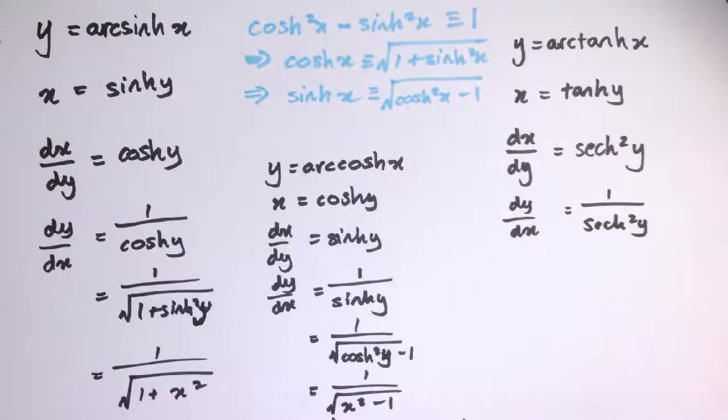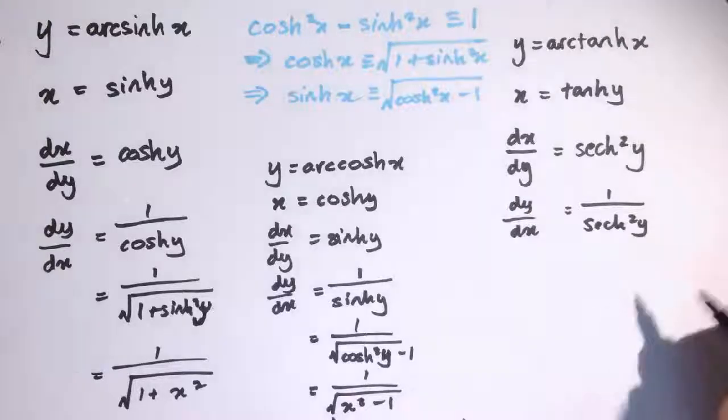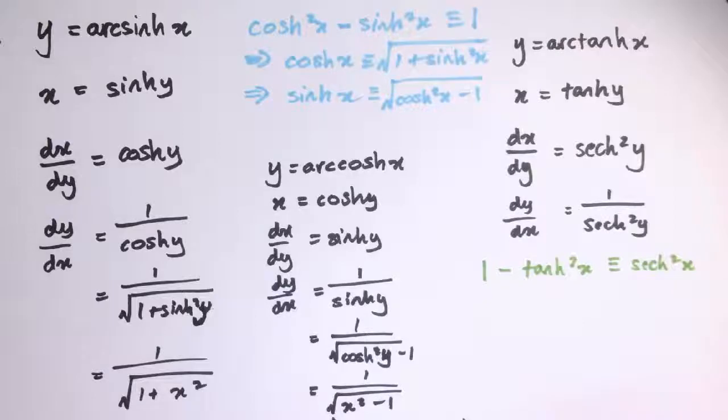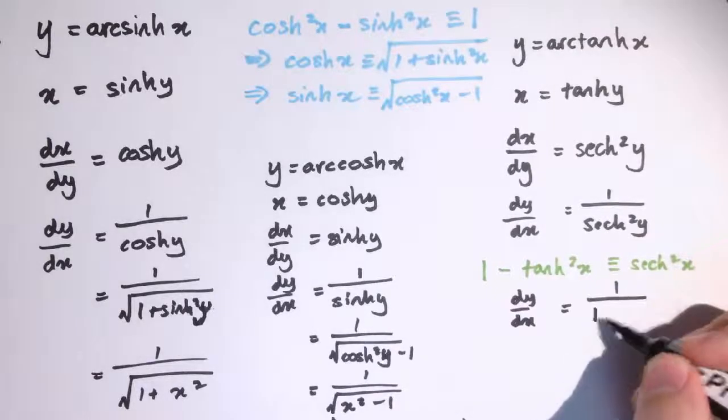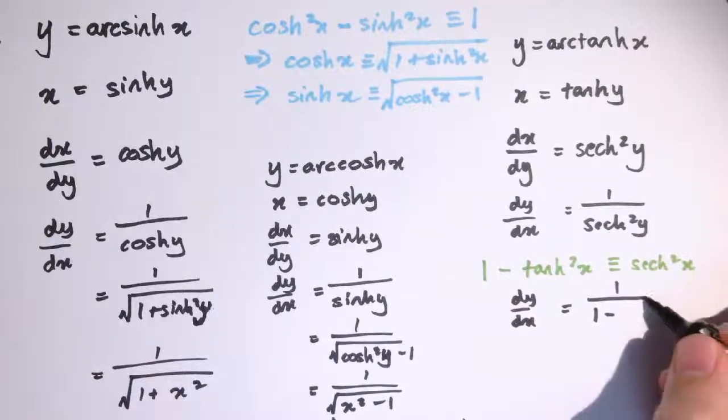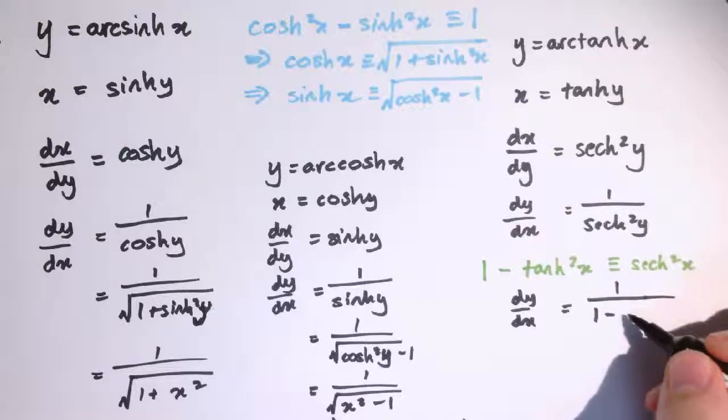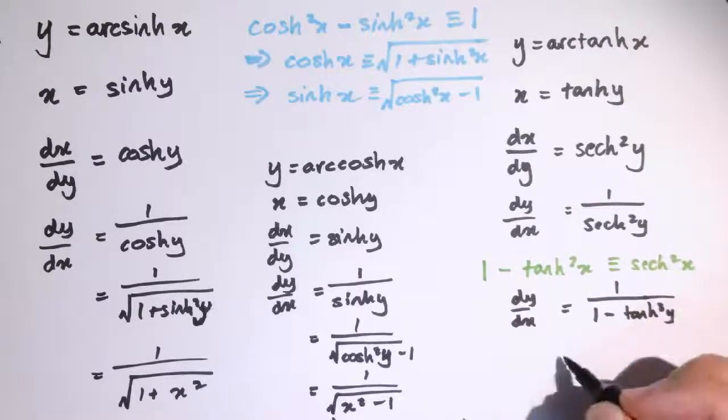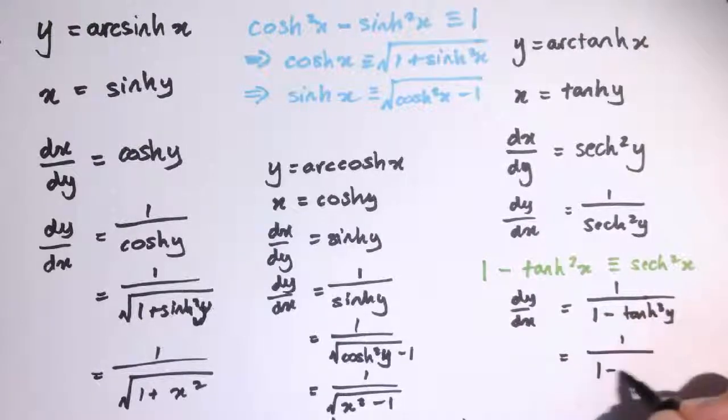The equivalent identity that comes from cosh squared minus sine squared x is 1 is 1 minus tanh squared equals cosh squared x. So we replace seth squared y with 1 minus tanh squared y, and get dy by dx equals 1 divided by 1 minus tanh squared y. And remember that tanh y was equal to x, so this is 1 divided by 1 minus x squared.